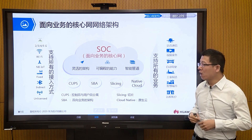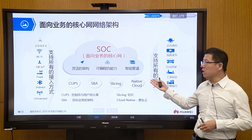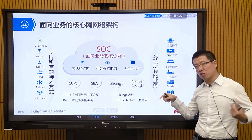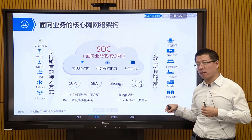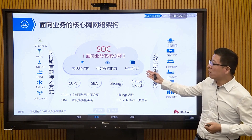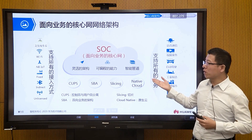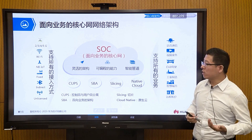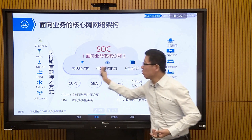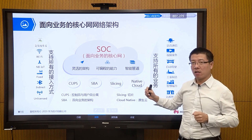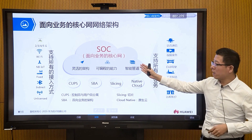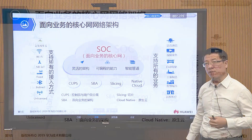A service-oriented core network supports all access methods. It doesn't particularly care how you access it — whether wirelessly through 5G or 4G, or via fixed network cables or fiber optics. It supports access through 2G, 3G, 4G, 5G, Wi-Fi, NB-IoT, or fixed networks. The core network simply connects end-users and does business control regardless of the access method.